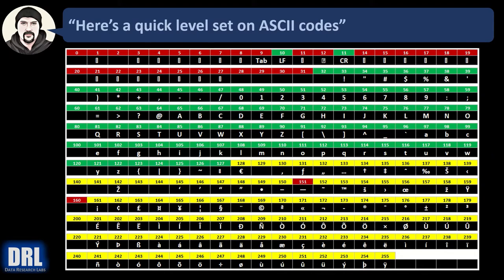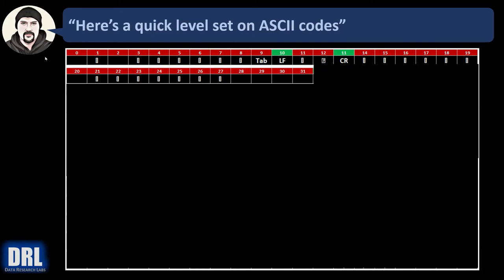Here's a quick level set on ASCII codes — the 255 characters that make up the ASCII chart. There are three main sections: red is bad, green is good, and yellow is neutral. The red characters, 0 through 31, are the control codes in set 1, and typically those can cause trouble. The line feed and carriage return, you may want to leave those. The tab character, sometimes you want to take it out. There's a whole bunch of other control codes you'll want to find and strip out if they're in a text document.